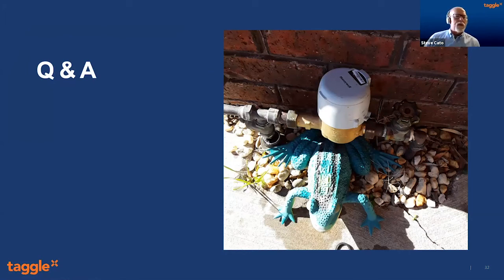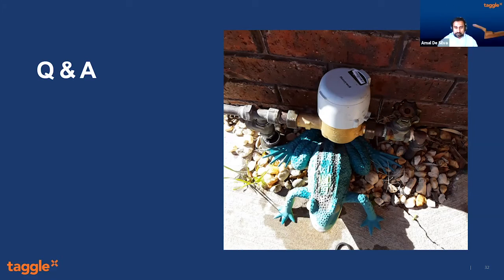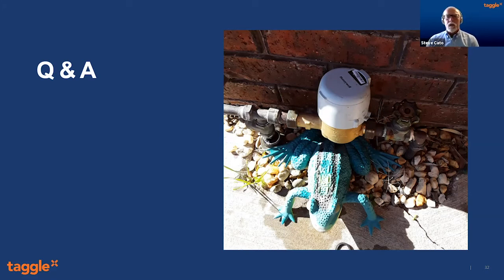There's a question from Ryan wondering why brackets are metal rather than plastic. The bracket that we're talking about is the tag bracket itself — the tag bracket doesn't go up past the antenna. It's much better to use a metal bracket just for longevity. We do have some plastic brackets in development, but at the moment we're using the metal brackets purely for strength and longevity.